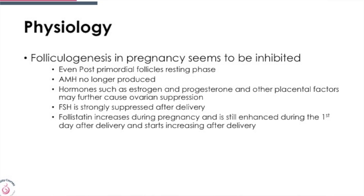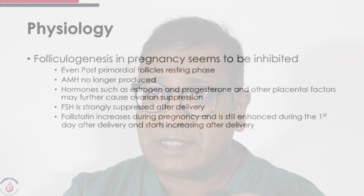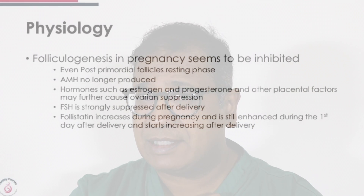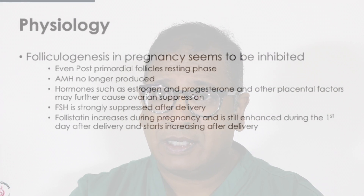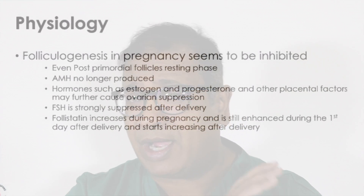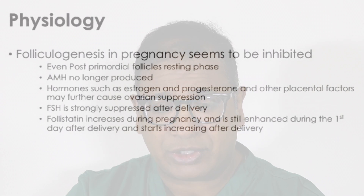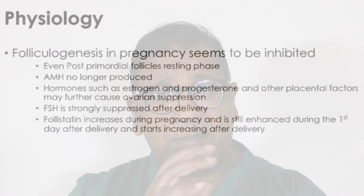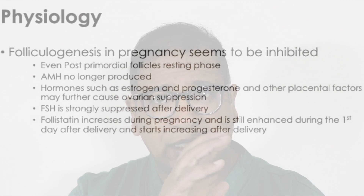It seems that folliculogenesis in pregnancy is inhibited, and even the primordial follicles go into a resting phase. AMH is no longer produced by many of these follicles. Hormones such as estrogen, progesterone, and other placental factors may further cause suppression of the ovary. Post-delivery, FSH is profoundly suppressed, and there may also be a role of follistatin, which increases during pregnancy and starts increasing after delivery.